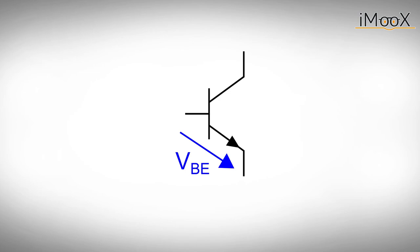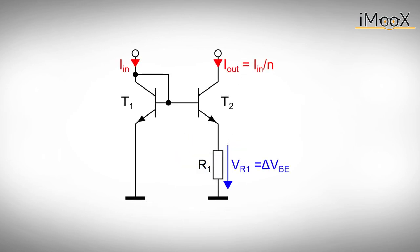Unfortunately, the base emitter voltage depends on temperature and changes about minus 2 millivolts per Kelvin. But if we add a voltage with a positive temperature coefficient, we can use it to compensate. To do so, we design a current mirror with a resistor R1 connected to one of the emitters.